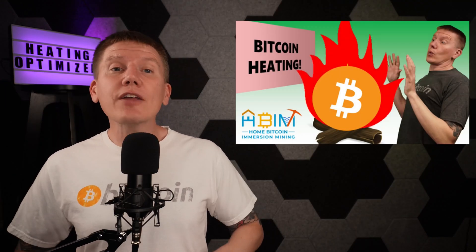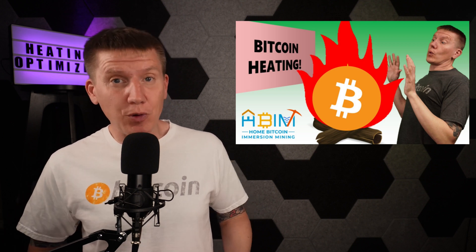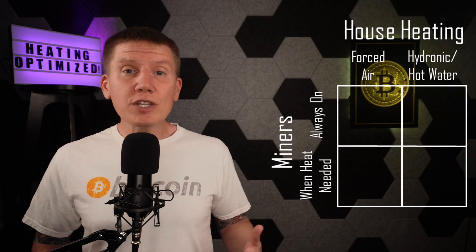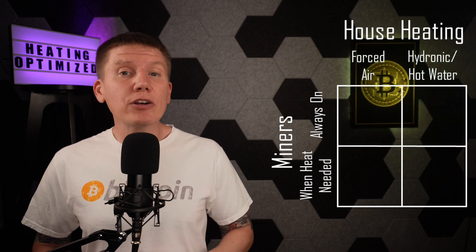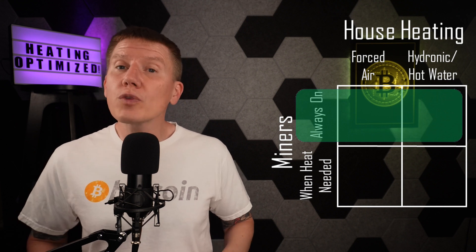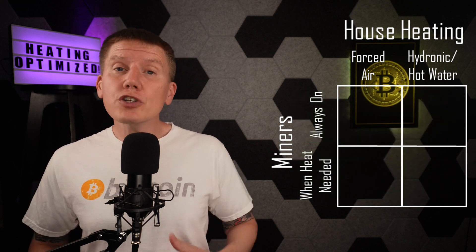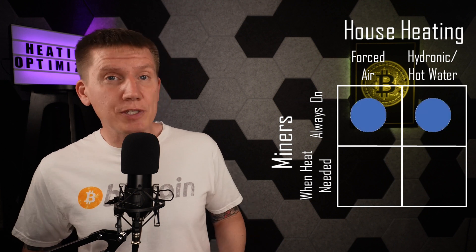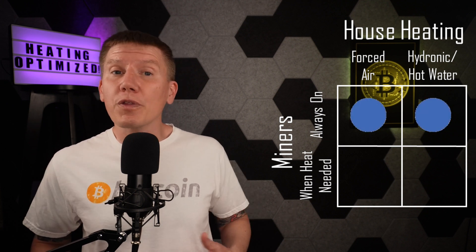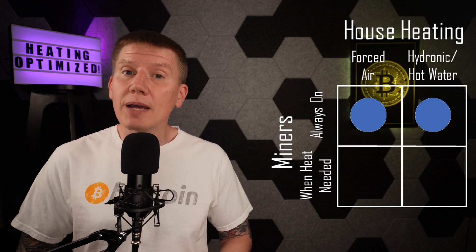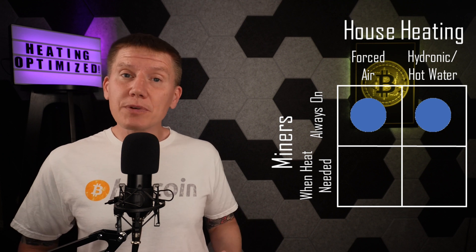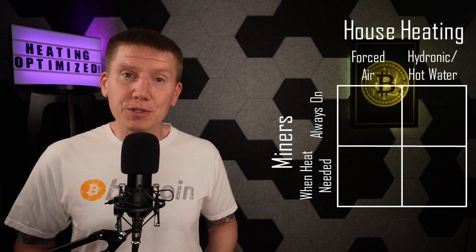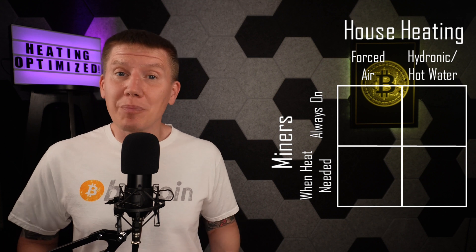In my first Home Heating with Bitcoin episode, I outlined the four different setups for heating your house with Bitcoin. Those are either using forced air or hydronic or hot water heat to heat your house, and either keeping your miners on all the time or turning your miners on only when heat is needed. In the first two design episodes, I covered the two options for keeping miners on all the time and how to integrate that heat into both types of home heating. I've got a link above to the design playlist where you can find these episodes and all of the other episodes covering how to build a Home Bitcoin Immersion Mining System.